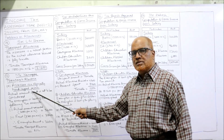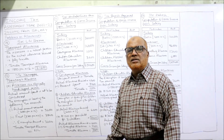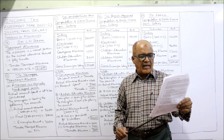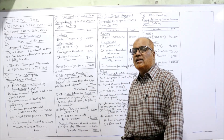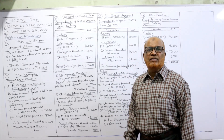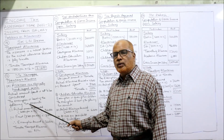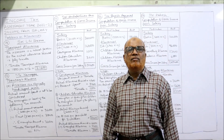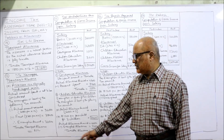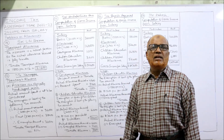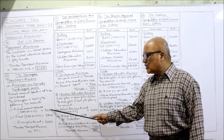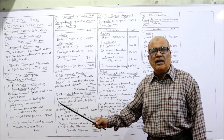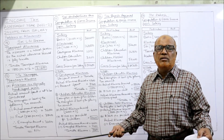In our problem, Mr. Kannappa is a physically handicapped person. The actual amount spent is not to be considered. Given: basic pay 7,500 per month, bonus 5,000 per annum, transport allowance 3,000 per month, actual amount spent 1,000. Simply take the transport allowance received. Exemption is the least of: actual allowance received 3,000 per month = 36,000, or the ceiling 3,200 per month = 38,400. The least is 36,000, so 36,000 is exempted. Actual allowance received equals exempted allowance, so taxable transport allowance is nil.